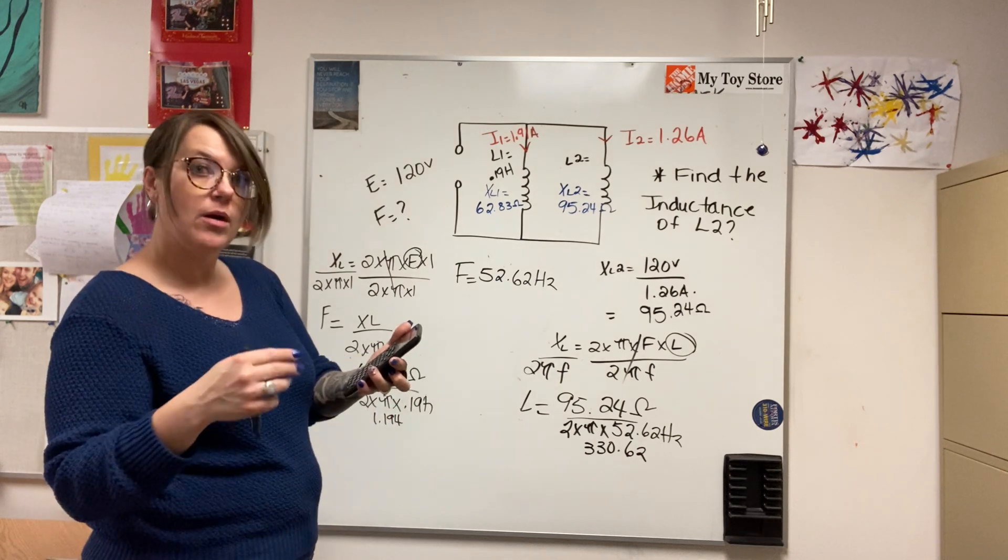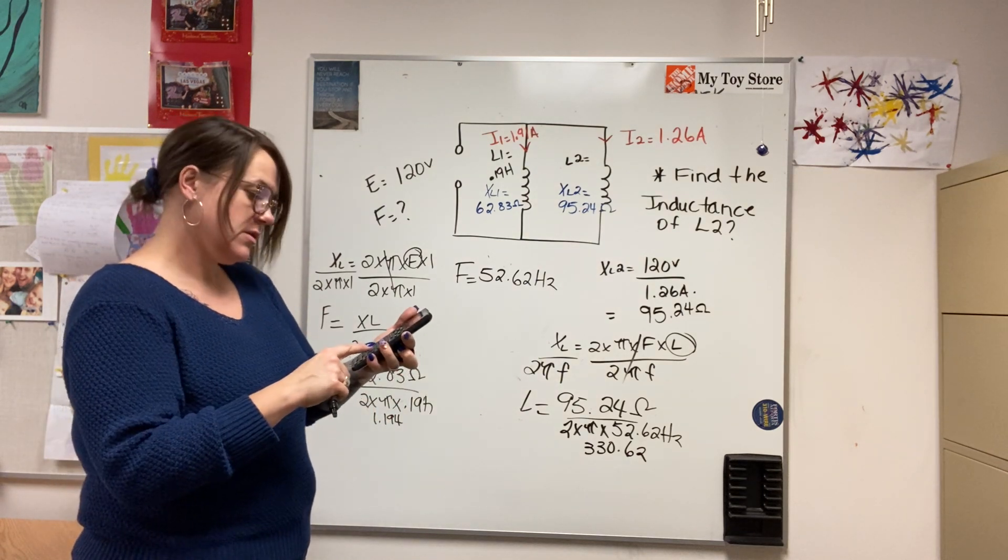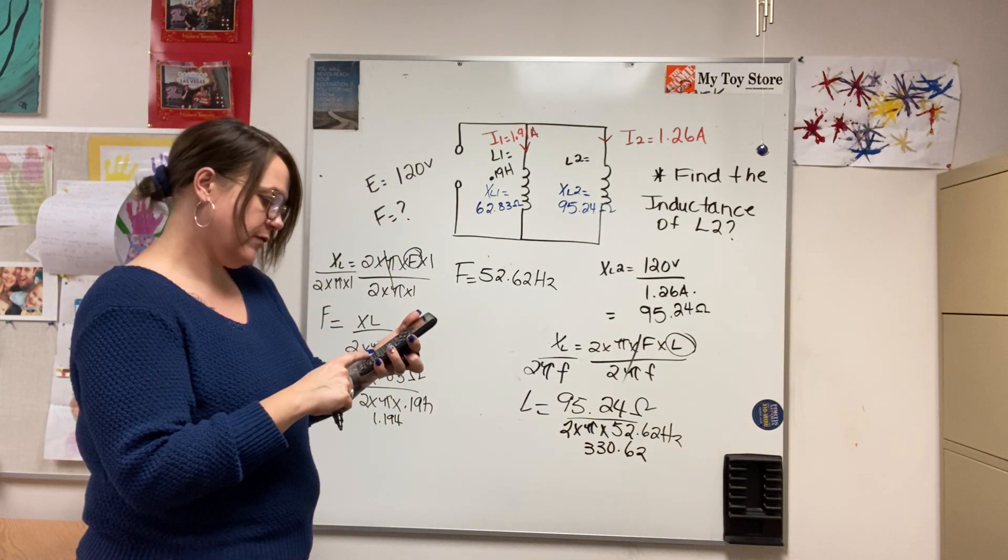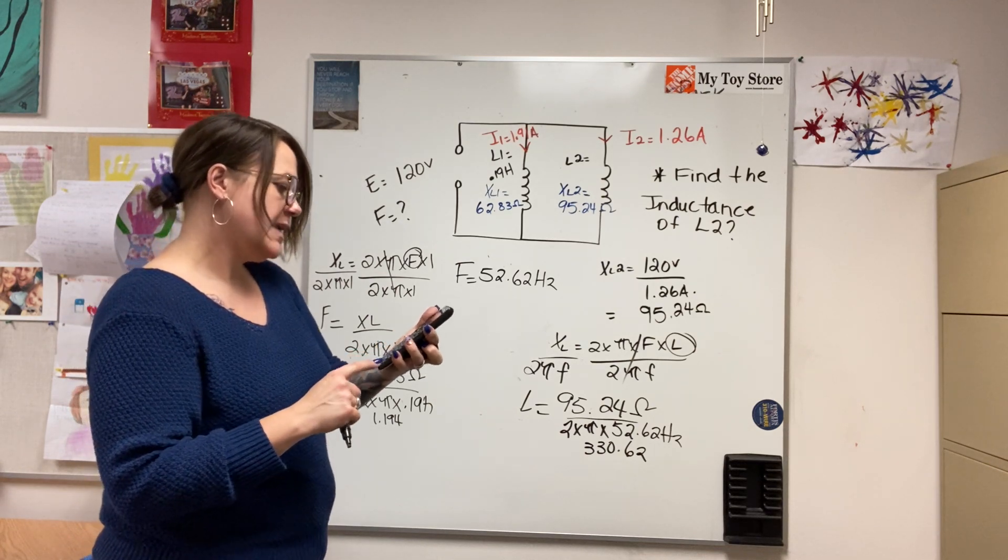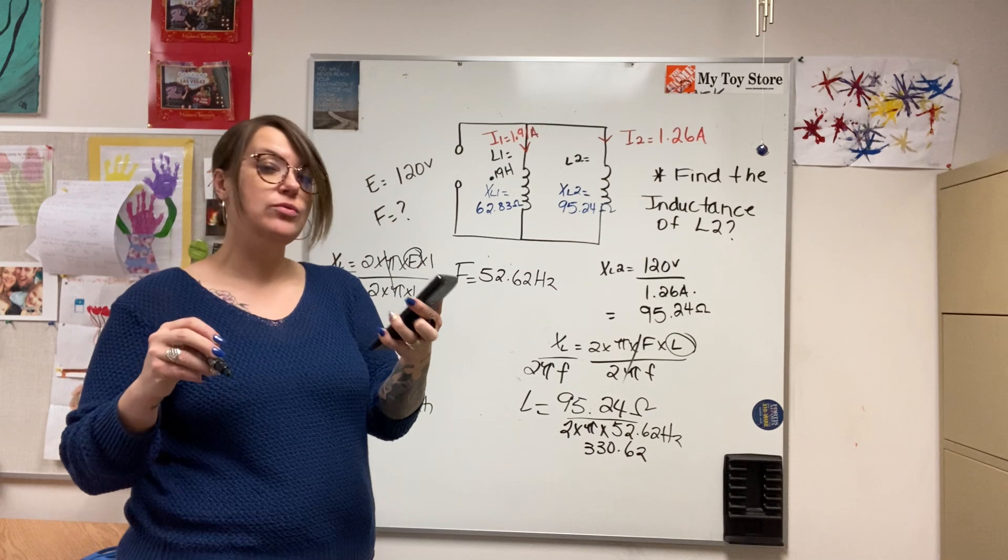That seems accurate. So 95.24 divided by 330.62 equals 0.288 L.